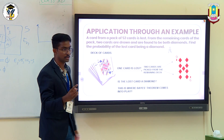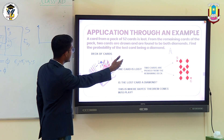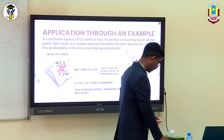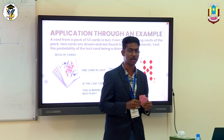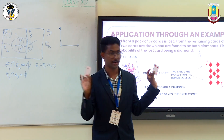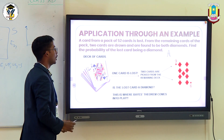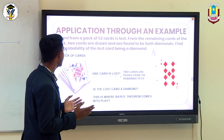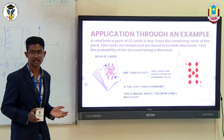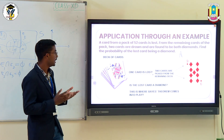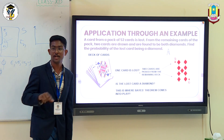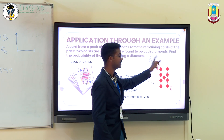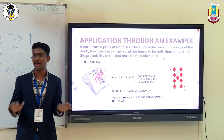From the remaining cards of the pack, 2 cards were drawn and both were found to be diamonds. Once this card was lost, you have now drawn 2 cards and it was found that both were diamonds. Now they have asked you to find the probability of the lost card being a diamond. They want you to find the probability of the lost card being a diamond given that both cards drawn after this one card was lost are diamonds. This is where Bayes' Theorem comes into play.